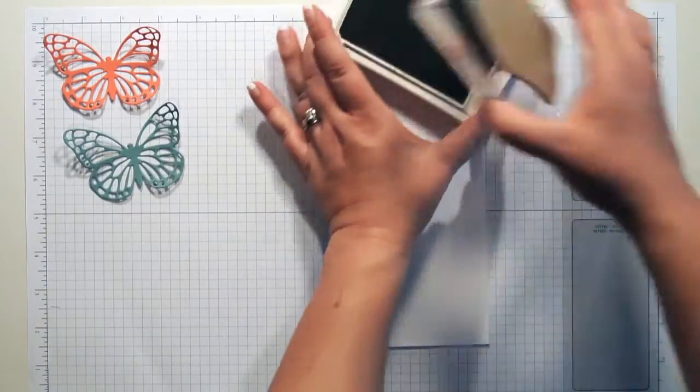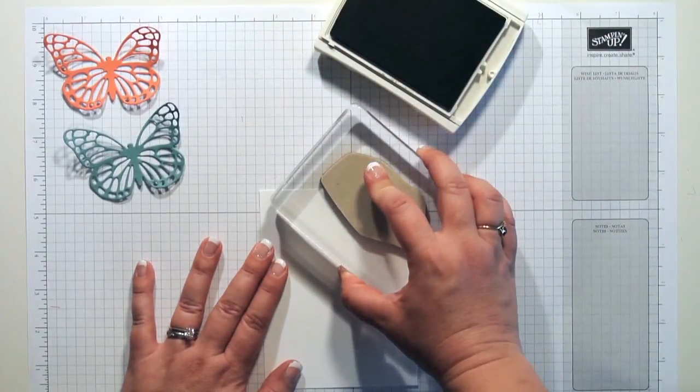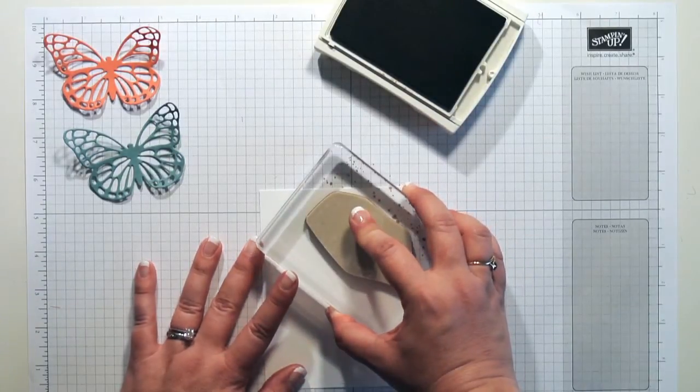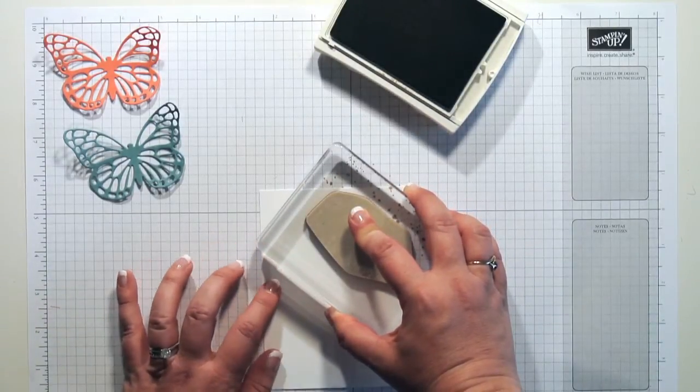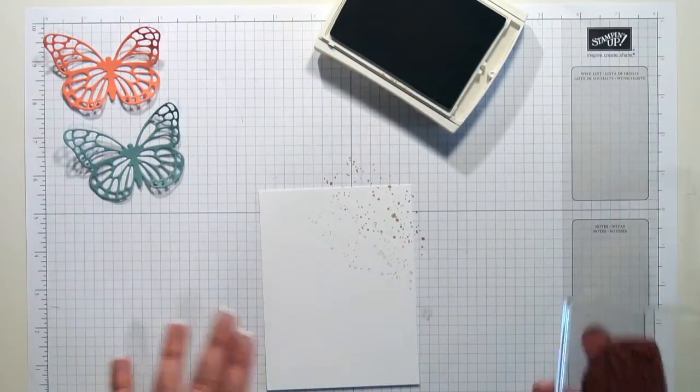And I want to ink it up, and I want to go straight down on my paper, straight up, and then I want to stamp again. This is called stamping off. It just gives it a lighter color, a watermark kind of a look.